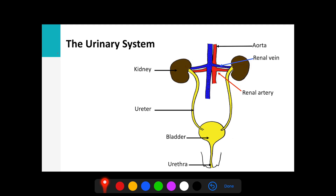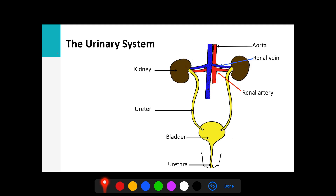Let's take a look at the urinary system. First, we have the kidneys — their main function is to filter the blood, and attached to them are the ureters. We have the urinary bladder, where urine is stored, and the urethra, from where urine is excreted. The blood from the heart passes through the aorta and is delivered to the kidneys via the renal artery. Once filtered, toxic materials are exported through the ureter to the bladder and urethra, while filtered blood returns to the bloodstream via the renal vein.